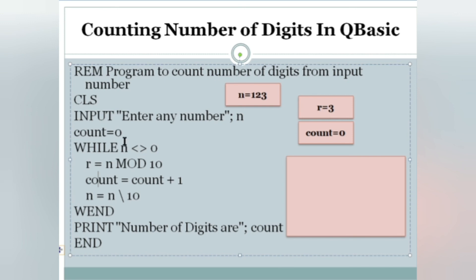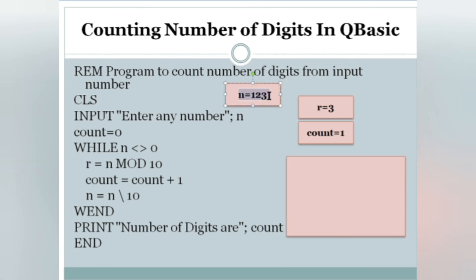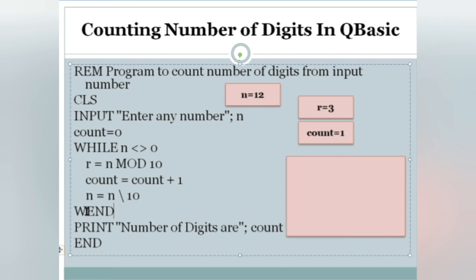Count equals to count plus one — count was zero, so now count is one. Then N equals to N integer division 10. Integer division gives the quotient without a decimal point, so 123 divided by 10 gives 12 — it removes the last digit. So N is now 12. When it reaches WEND, it goes back to check the condition again.